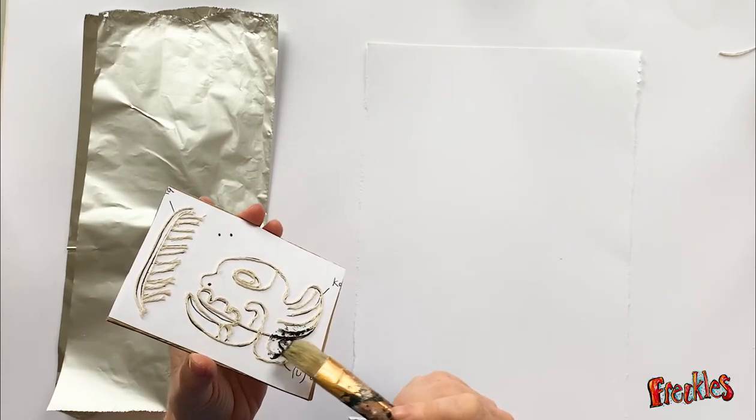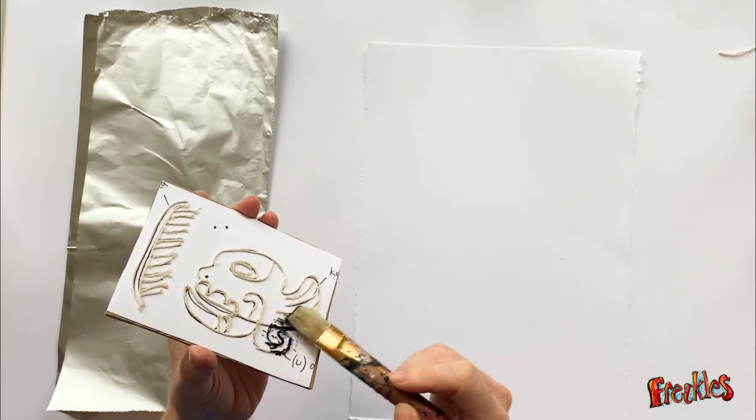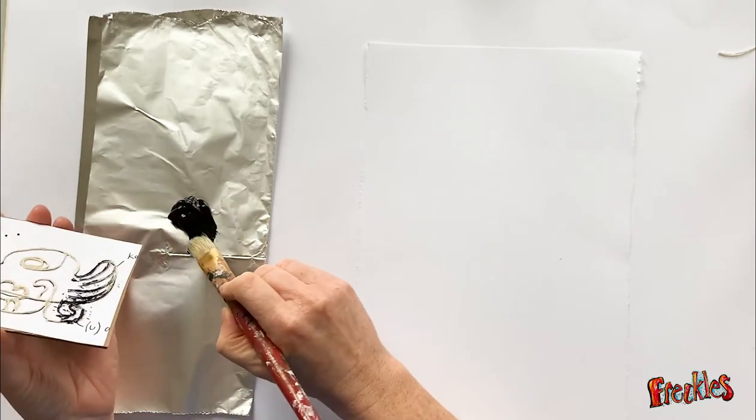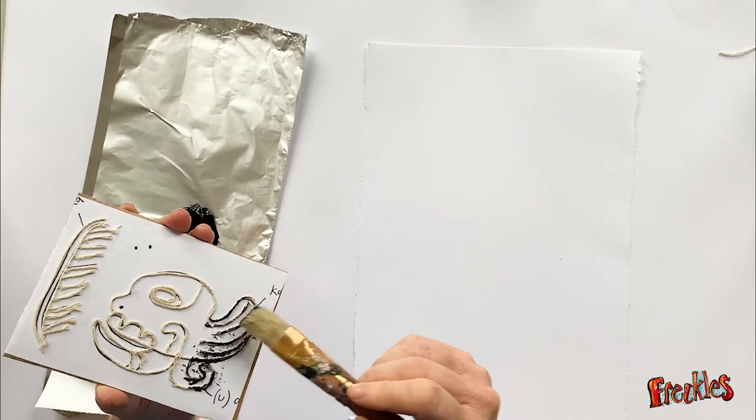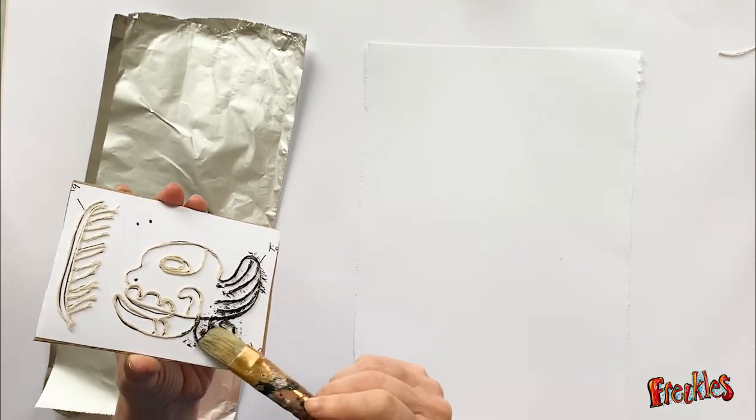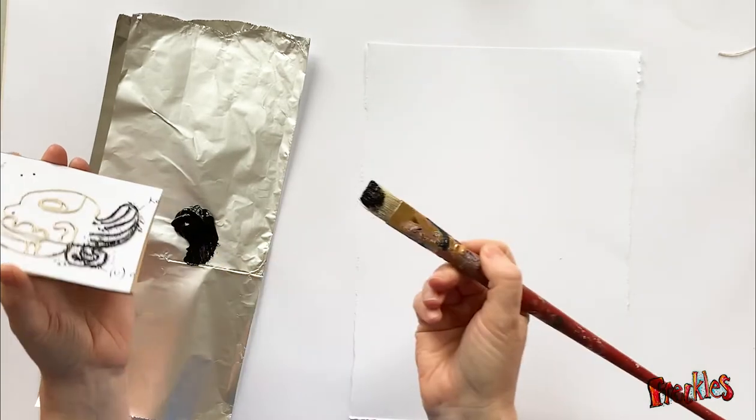So we get some of our paint and we just dab it, just dab it onto the string. This is a complete experiment here. I'm hoping it's going to turn out really well, just not getting too much on my brush.